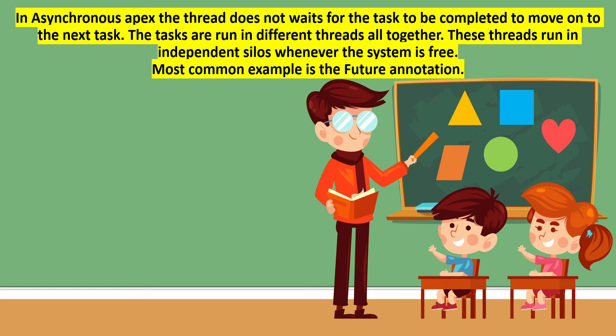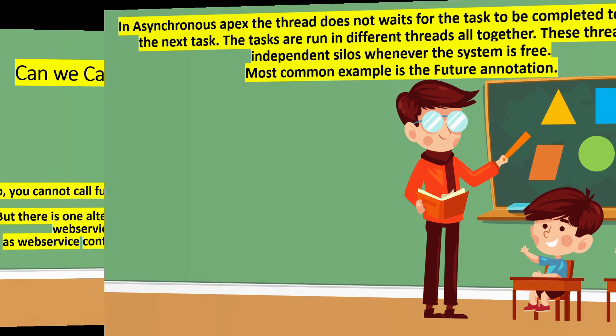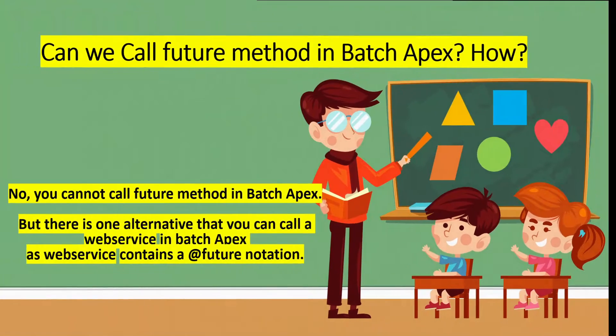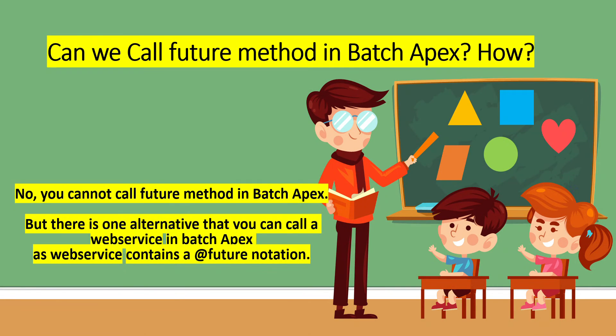The most common example of an asynchronous operation is the future annotation. Now, can we call a future method inside batch Apex?